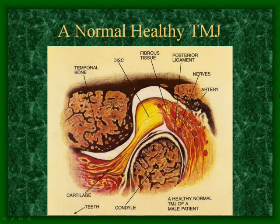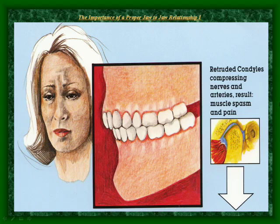A normal, healthy TMJ indicates all the essential structures, such as the temporal bone, disc, fibrous tissue, nerves, and arteries. Retruded condylus compresses the disc as well as the nerves and arteries surrounding it. This causes spasms, pains, and headaches.